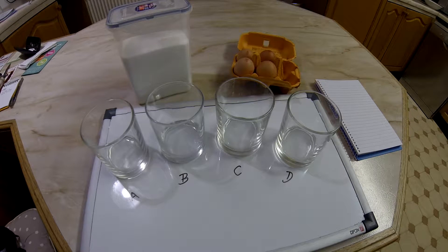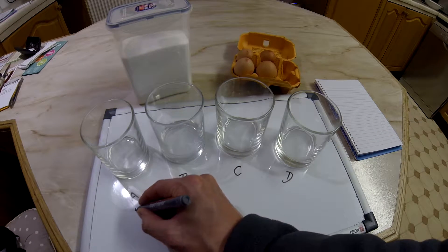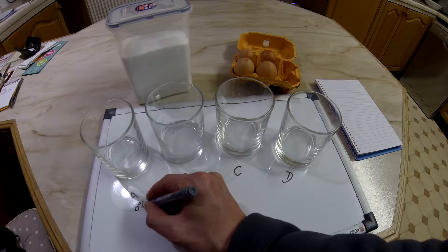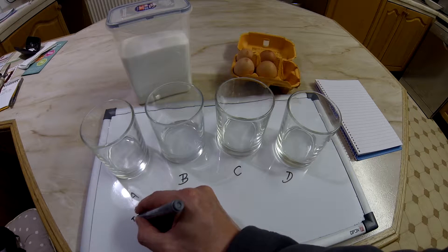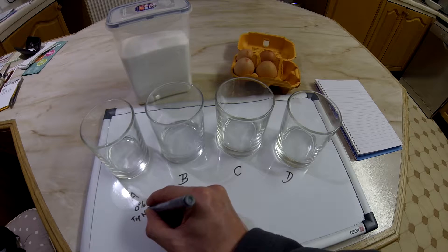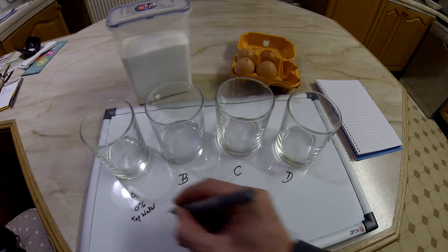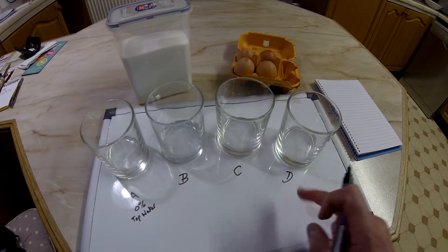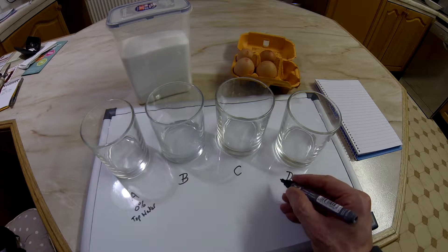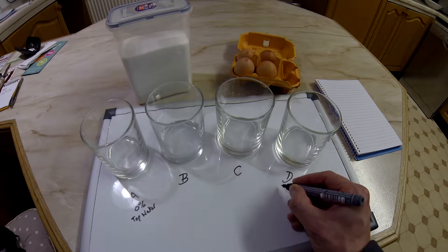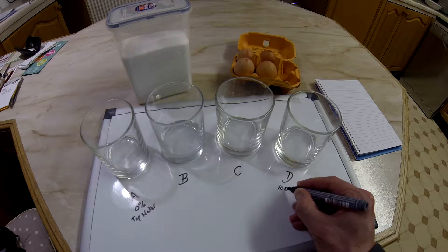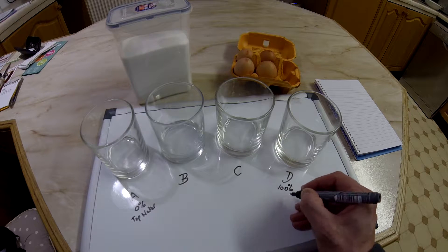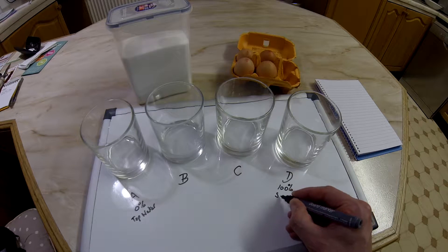In glass A, I'm going to be having 0% salt. That's going to be just straightforward tap water. In glass D, I'm going to see how much salt I can dissolve and take it to complete saturation. So that will be 100% saturated.